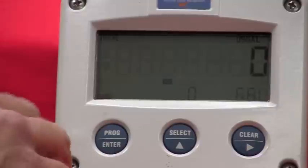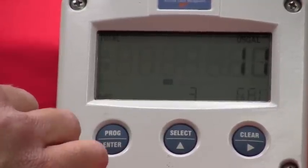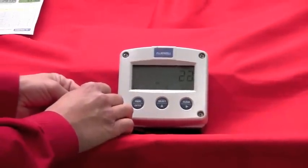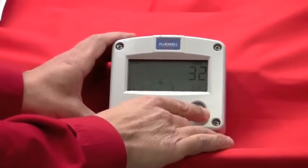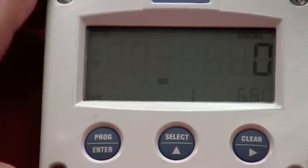There you go. Now in this case, I can just simulate a flow by pushing the button. You can see my totalizer counting. You can see the flow rate on the bottom lower right-hand corner there. And again, to reset the unit, clear, clear, and you'll reset your totalizer back to zero.